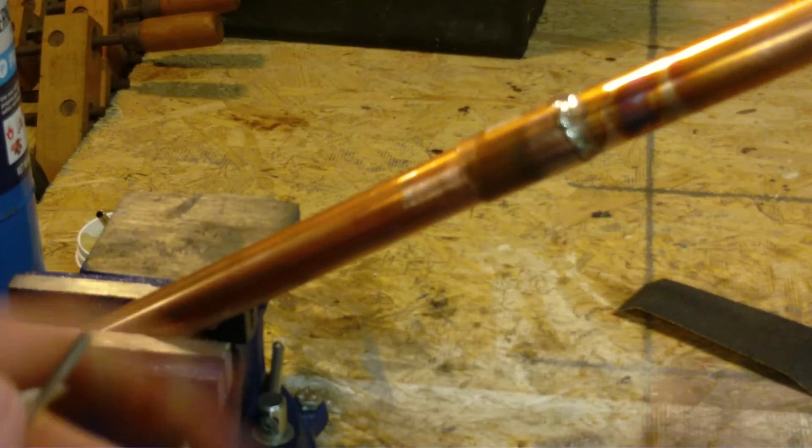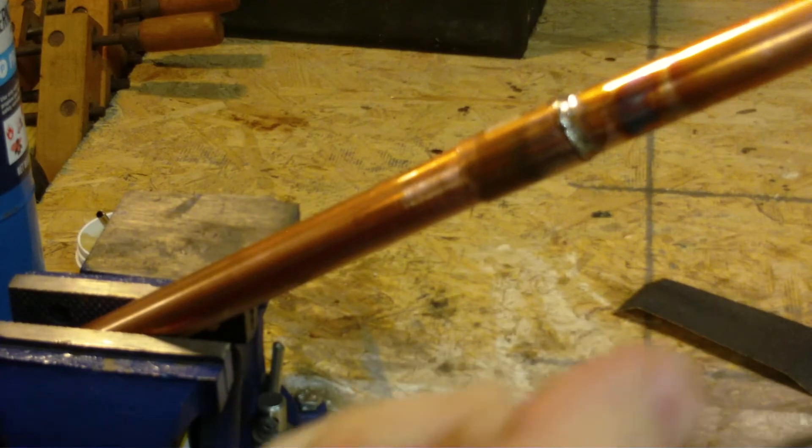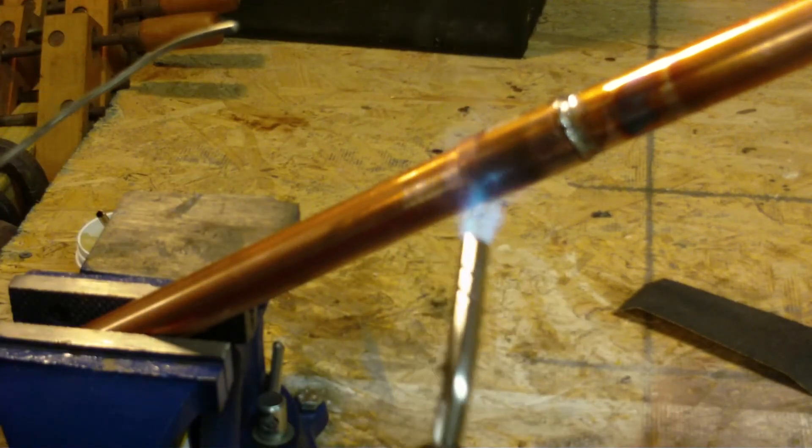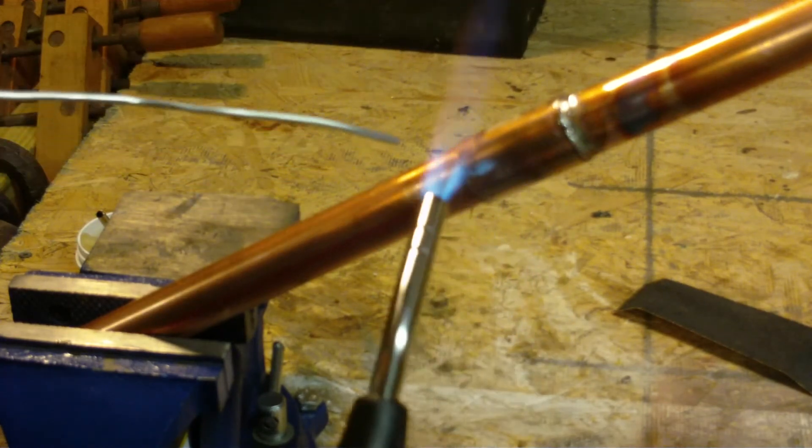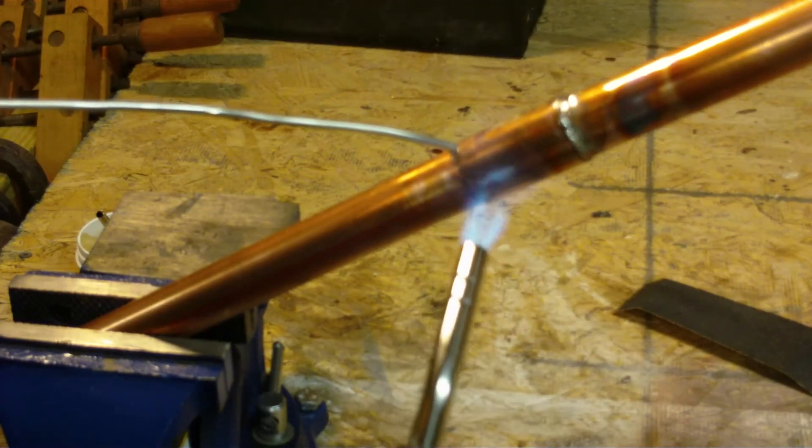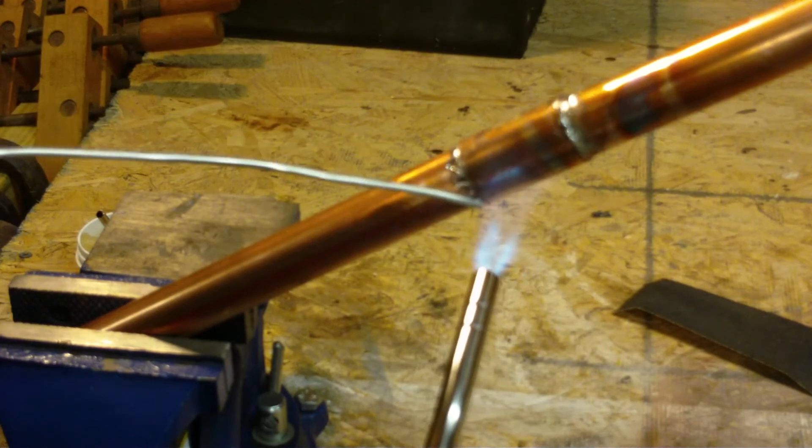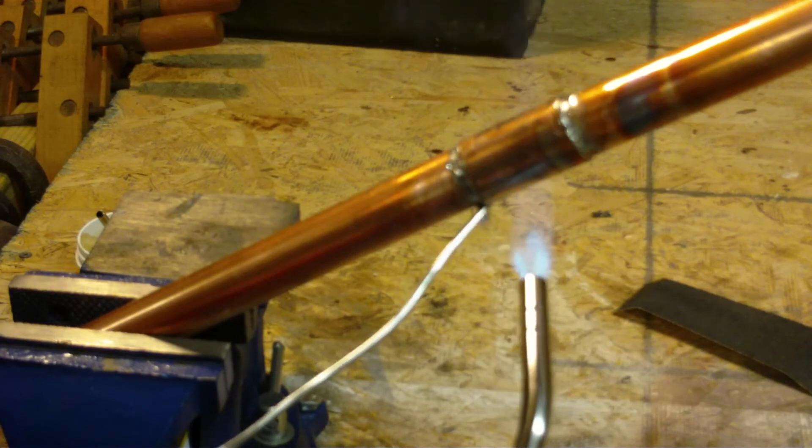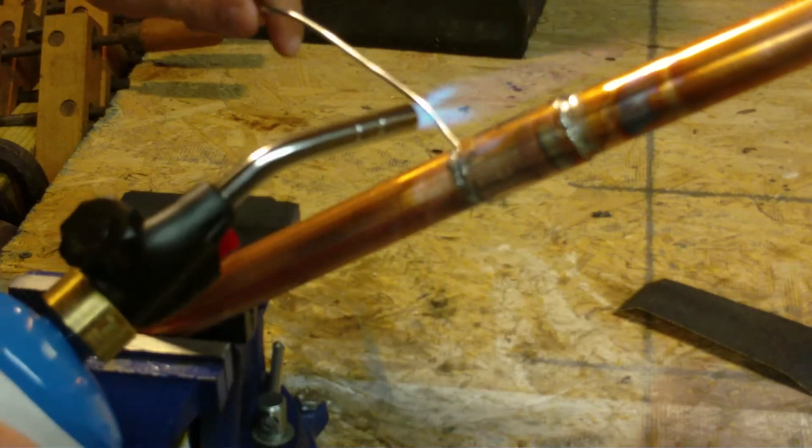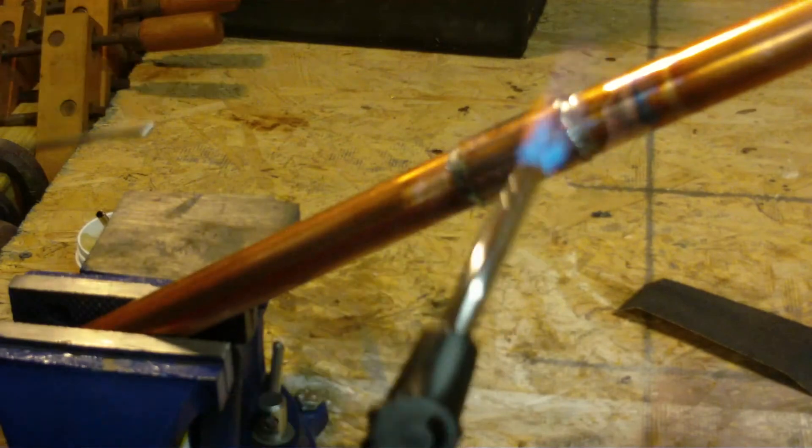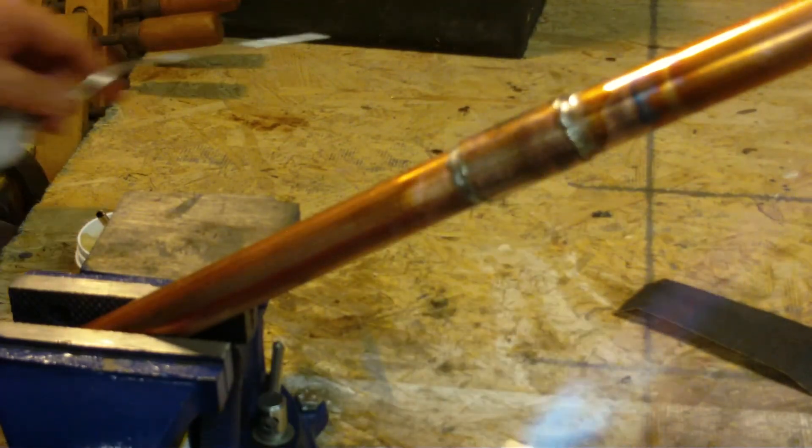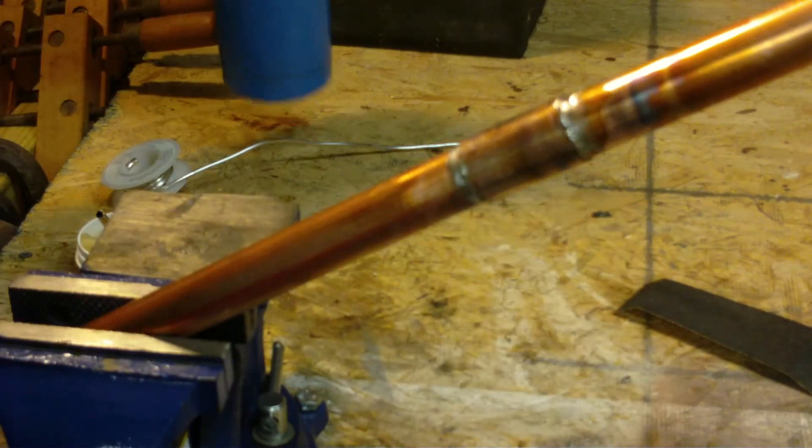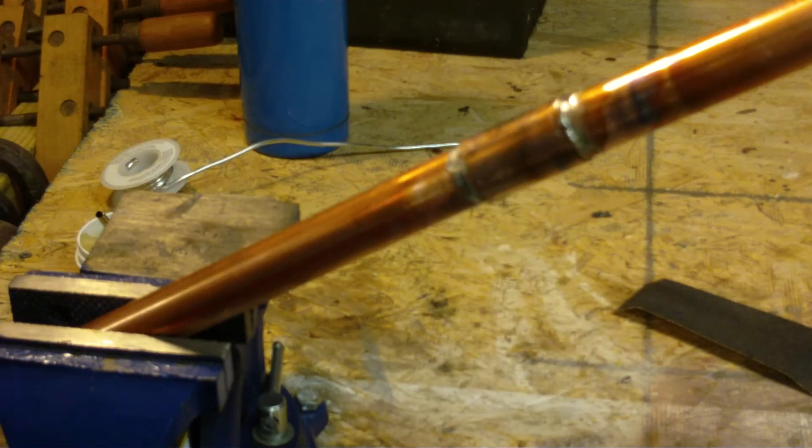I'm going to add some more solder to see the bottom of that joint. I'm going to heat that back up. When you start seeing the flux bubble inside the coupling, it's usually a good sign you're at the right temperature. Make sure you get all around there so there's no holes. And that's how you sweat on a copper fitting.